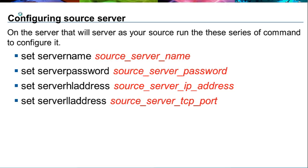The commands for the source server are identical to those for the target server. The only difference is you do not turn cross-define on. Cross-define only needs to be turned on on one side of the server pair — in this case, it was turned on on the target server.